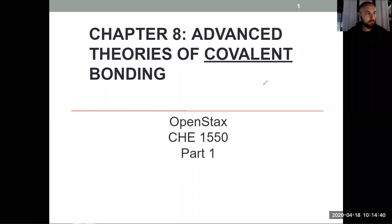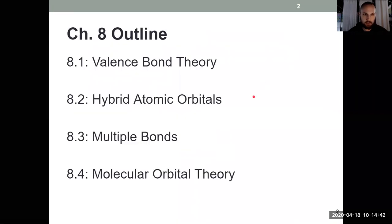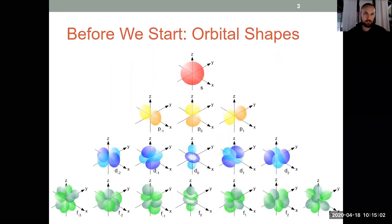So what does the format for this chapter look like, the outline? In this first shorter video, we're going to talk about valence bond theory. Then in the second video, third and fourth, we'll talk about hybrid orbitals, multiple bonds, so double bonds and triple bonds. And then lastly, molecular orbital theory. But like I mentioned, we're combining ideas from 6 and 7. So what information do we need to bring forward with us?